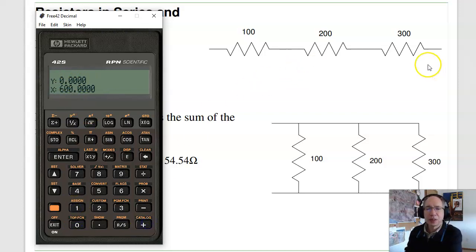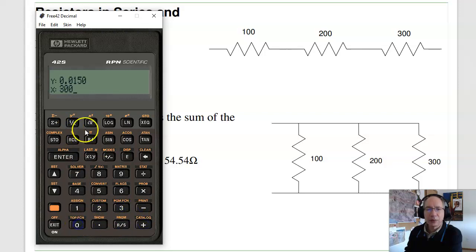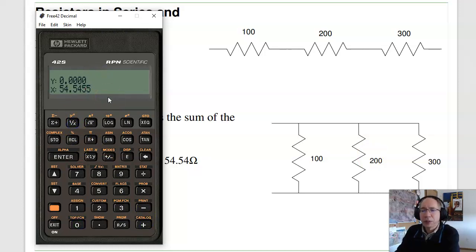The total for series is 600 ohms. In parallel, I take the inverse of 100, add to it the inverse of 200, add to it the inverse of 300, then take the inverse. It's 54.54 ohms.